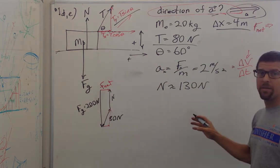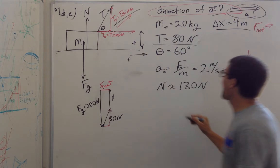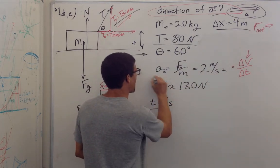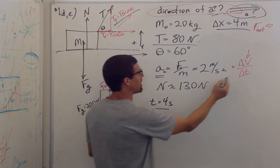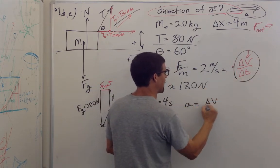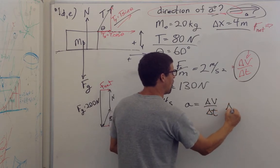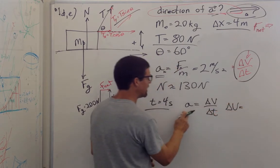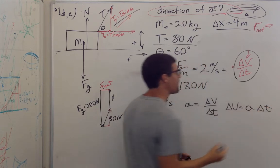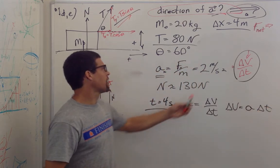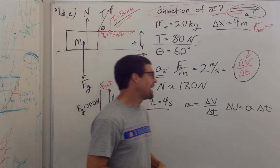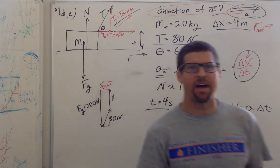Then, of course, we can use kinematics, because we have a time — we pull it for 4 seconds — and we have an acceleration. Acceleration equals change in velocity over change in time, so the increase in velocity equals acceleration times change in time. I'm accelerating at 2 meters per second squared for 4 seconds, giving a final velocity of 8 meters per second.